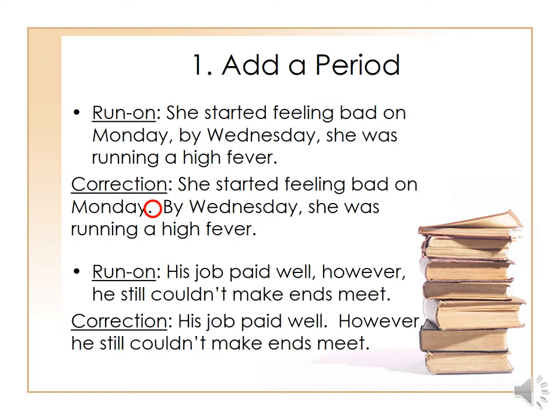Another example and correction: 'His job paid well, however, he still could not make ends meet.' We have two sentences connected with a comma. You switch the comma to a period, and of course make sure that 'however' starts with a capital H.